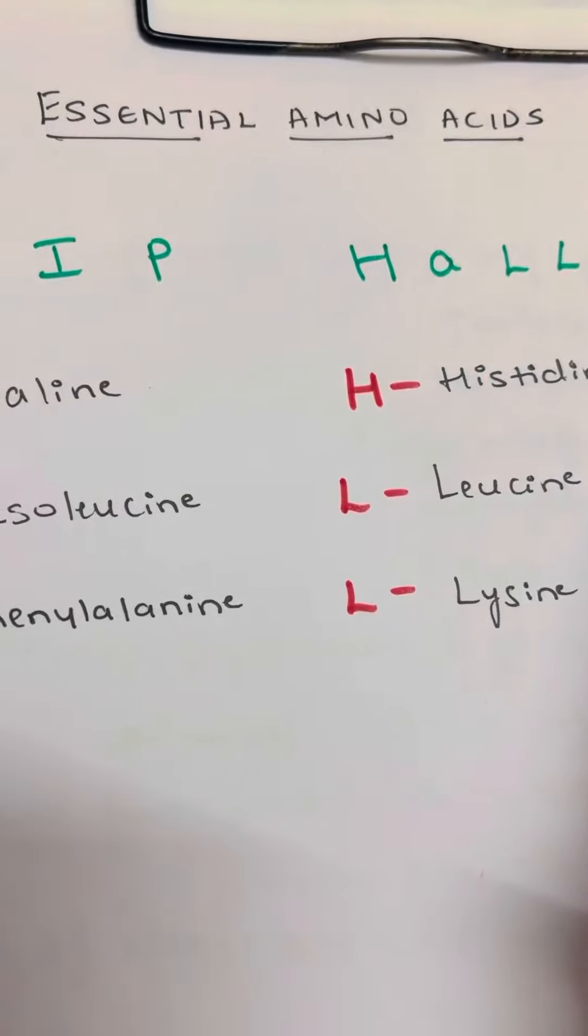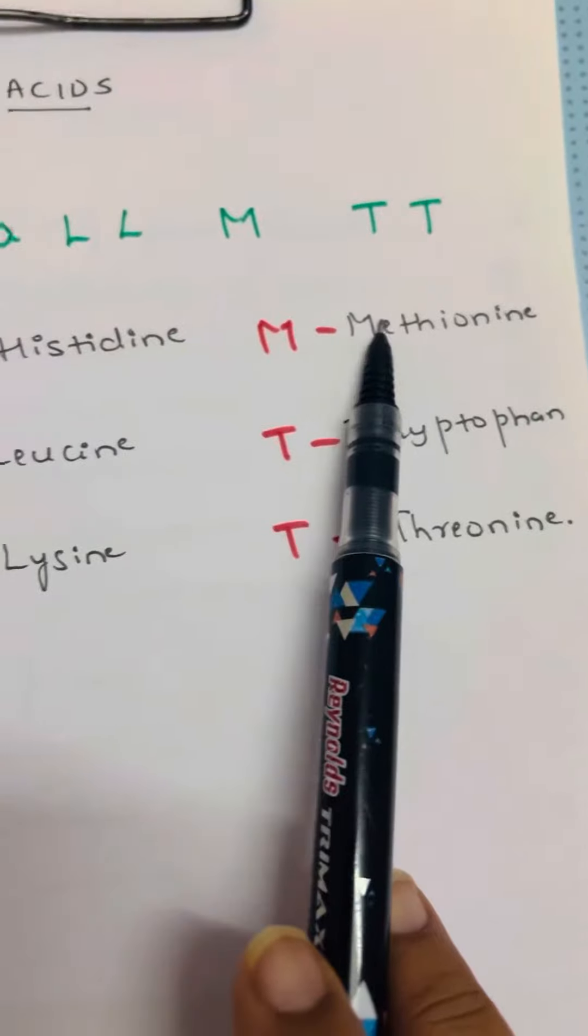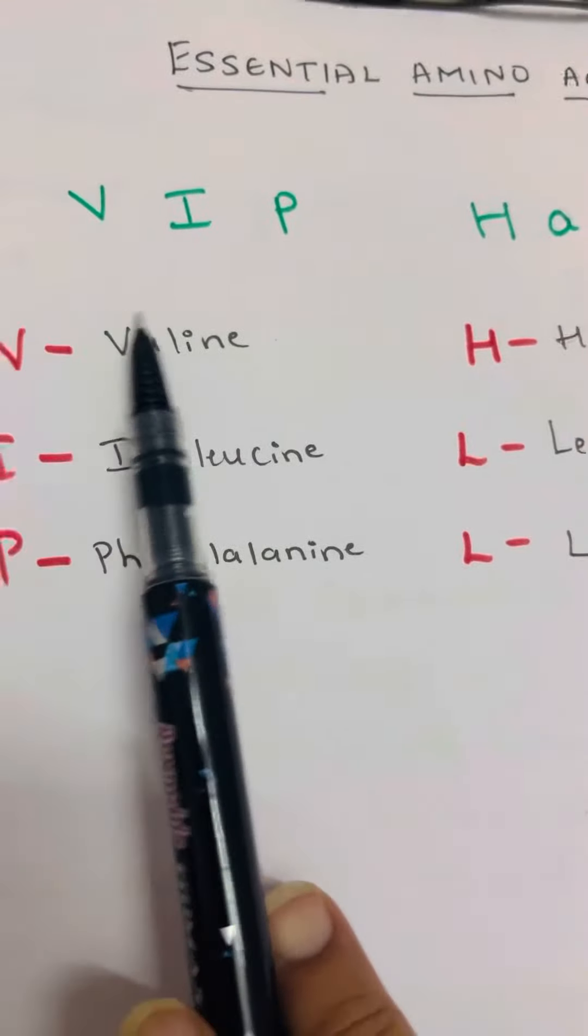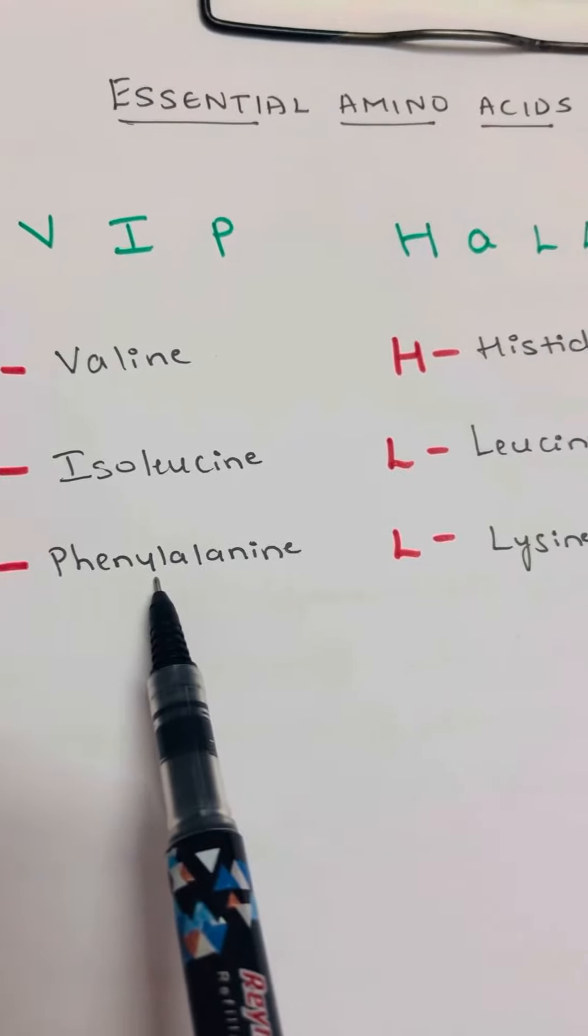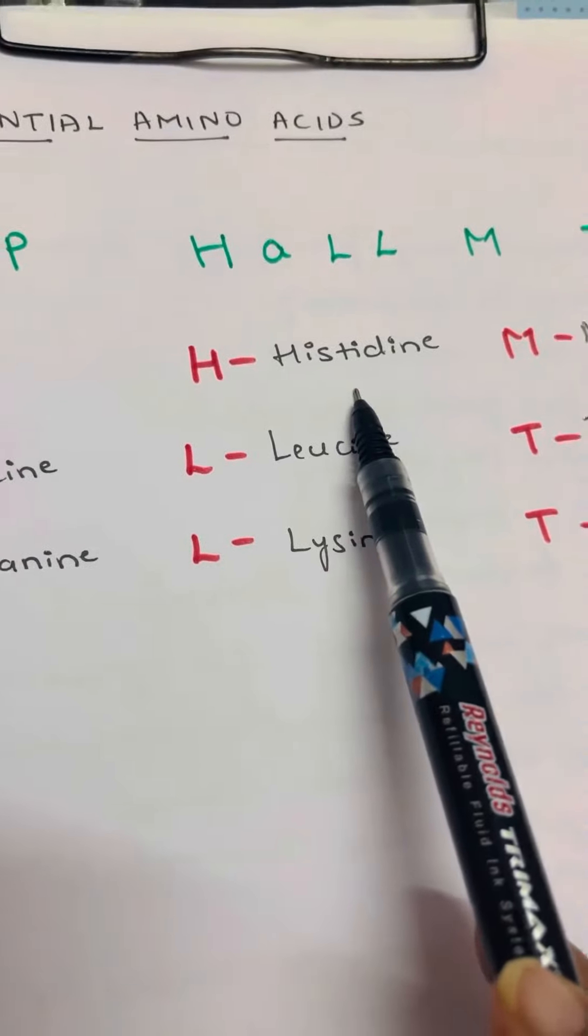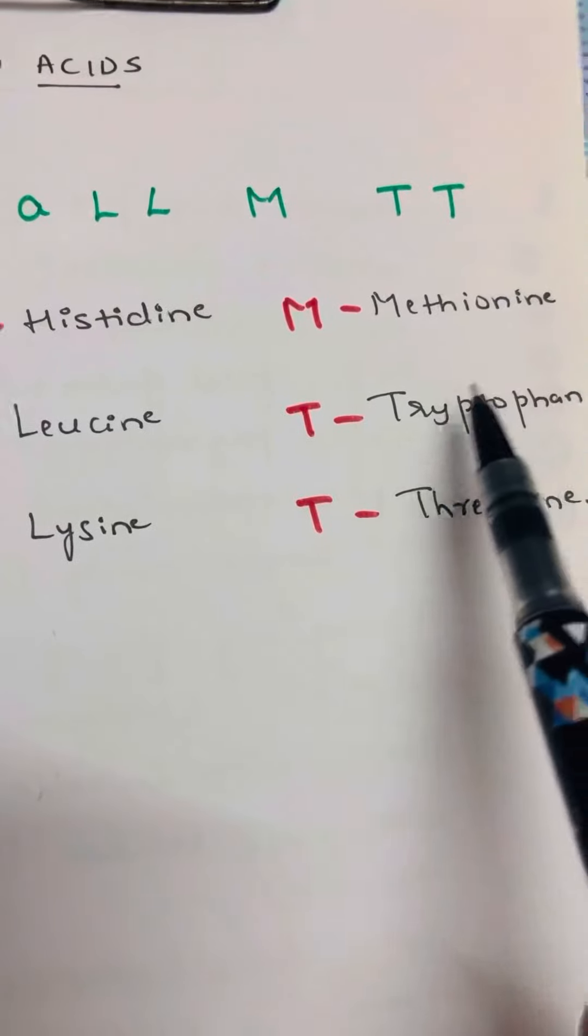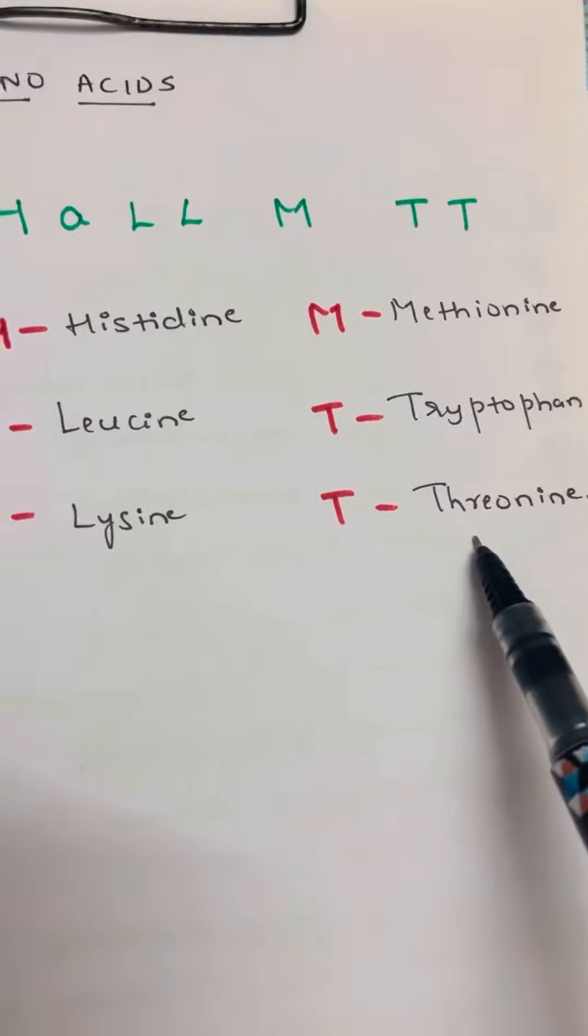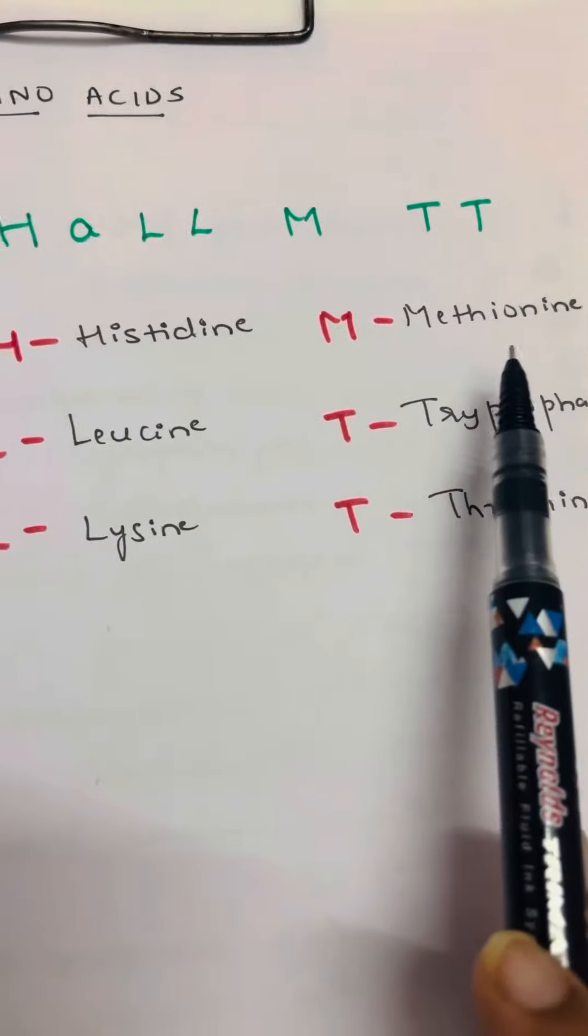Today we'll discuss the trick to remember essential amino acids. The trick is VIP HALL MAY TT. V-I-P: Valine, Isoleucine, Phenylalanine. H for Histidine, then Leucine and Lysine. M for Methionine, and T-T for Tryptophan and Threonine.